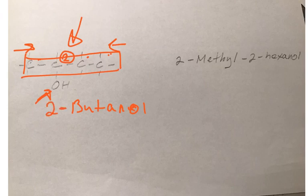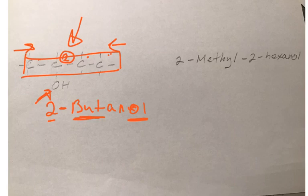So the thing is, we're not going to leave it like that because which carbon is this OH group hanging off of in terms of the lowest number? Checking from left to right and right to left, we see it's hanging off of carbon number two in the parent. So you simply call it 2-butanol, and you're done.